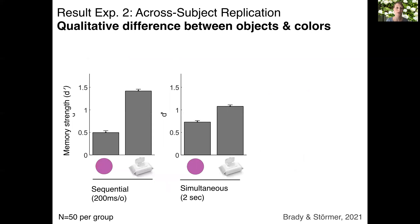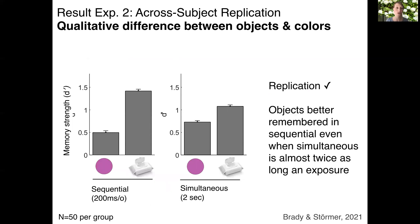In a second experiment, we replicate these results across subjects, demonstrating that these effects are robust and also not driven by order effects. So again, we see a real-world object benefit across all conditions, and that this benefit is larger during sequential versus simultaneous encoding, even when simultaneous encoding is almost twice as long as sequential in this particular version of the experiment. Colors again show the opposite, benefiting mostly from simultaneous encoding.